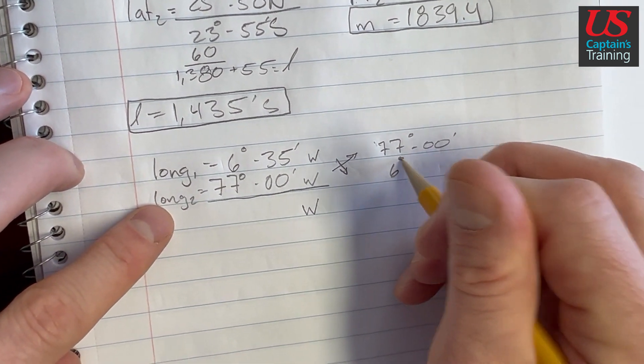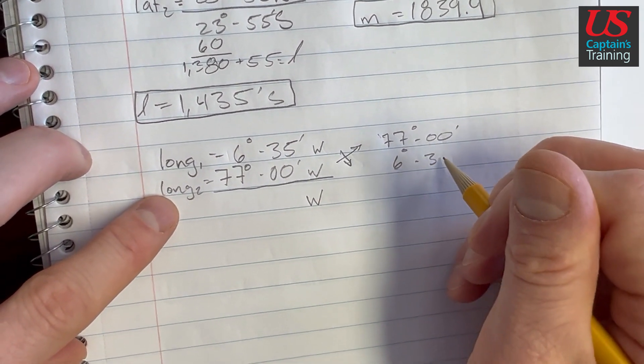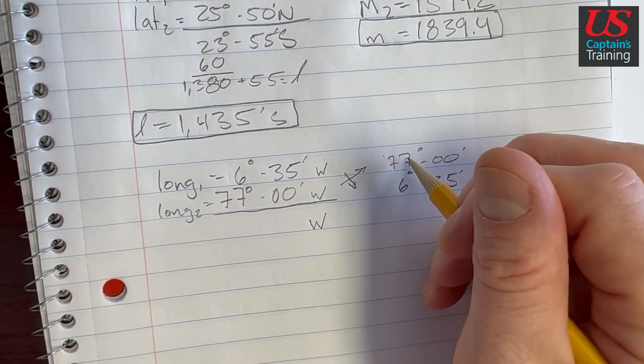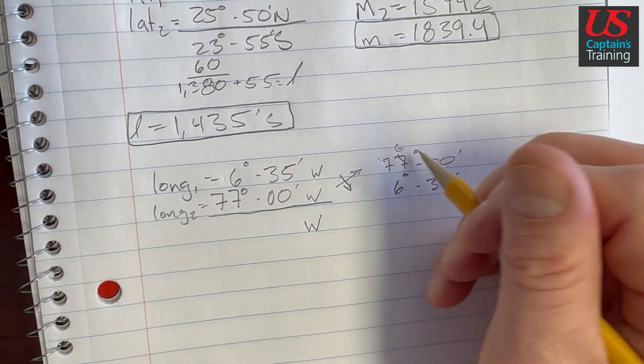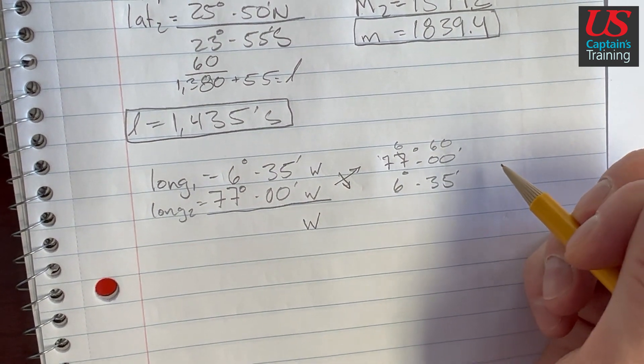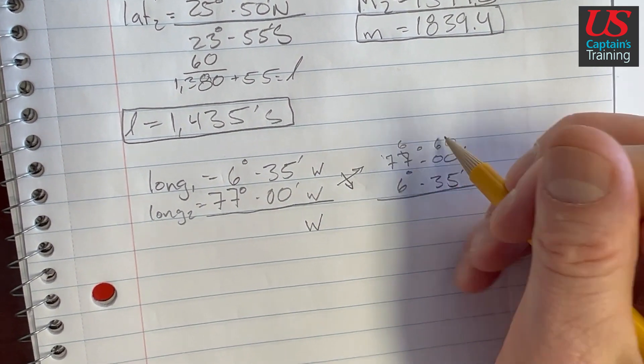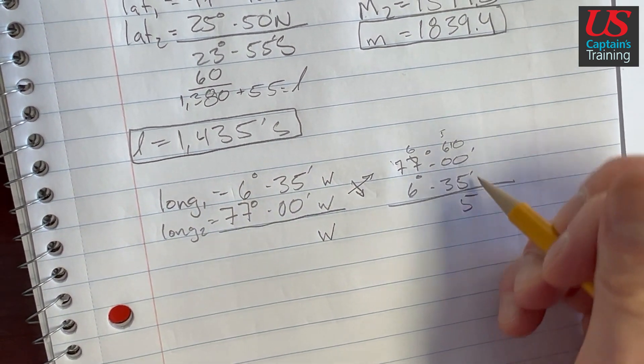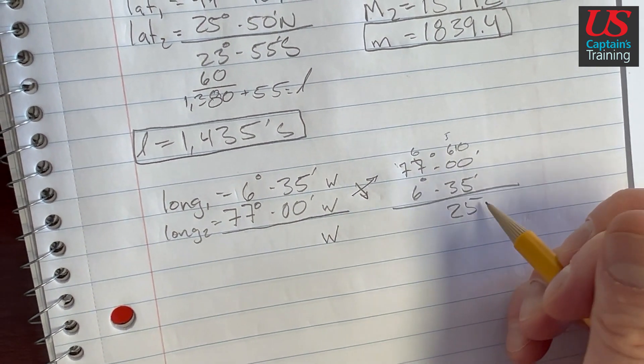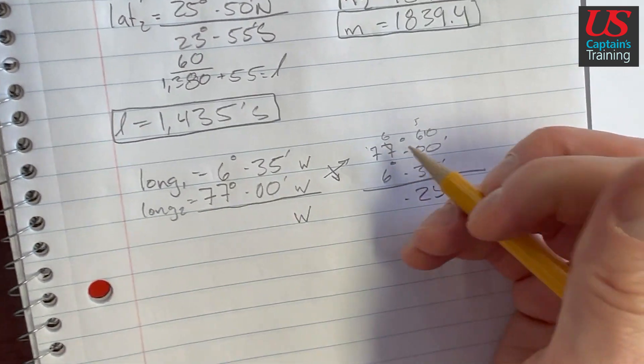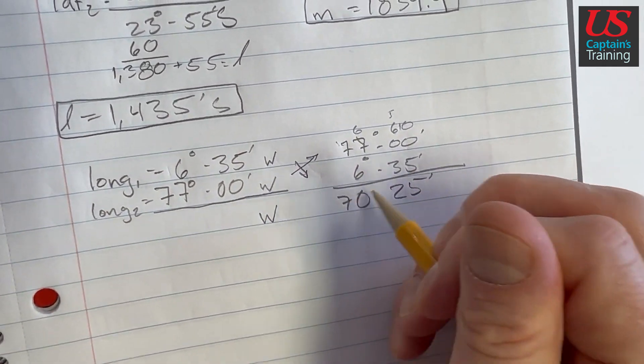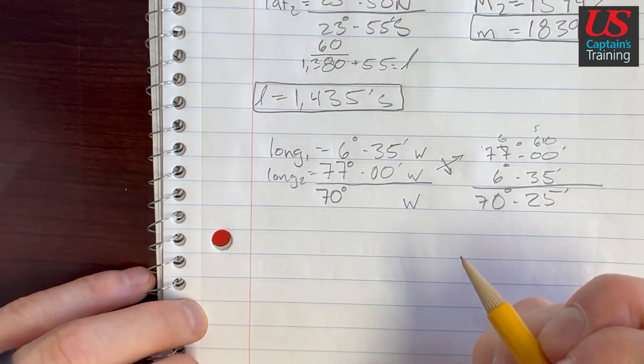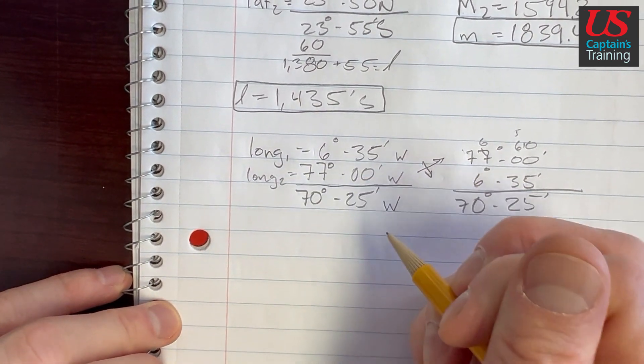77 minus 6 degrees 35 minutes. So we are going to grab one of these, now we're going to grab one of these minutes. So that would end up being a 6, and this will end up being 60. And then 60 minus 35, let's just do it longhand. Five, five, four, three, two, 25 minutes. And this will be 6 minus 6 is 0. 70 degrees 25 minutes. Let's bring it over here. Keep it all straight. 70 degrees 25 minutes west.